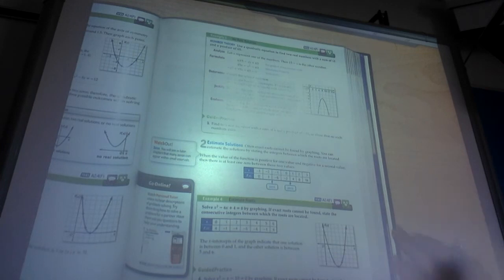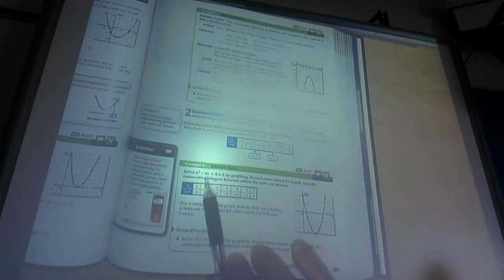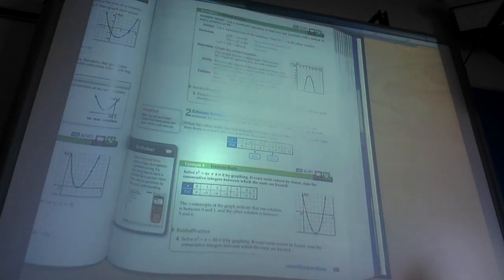The last thing that I'm going to show you without doing it in the notes, and this is something you might see in ConnectEd, it's extremely easy. It says solve this one by graphing. It says if exact roots cannot be found, state the consecutive integers between which the roots are located. That just means the consecutive big numbers or whole numbers.